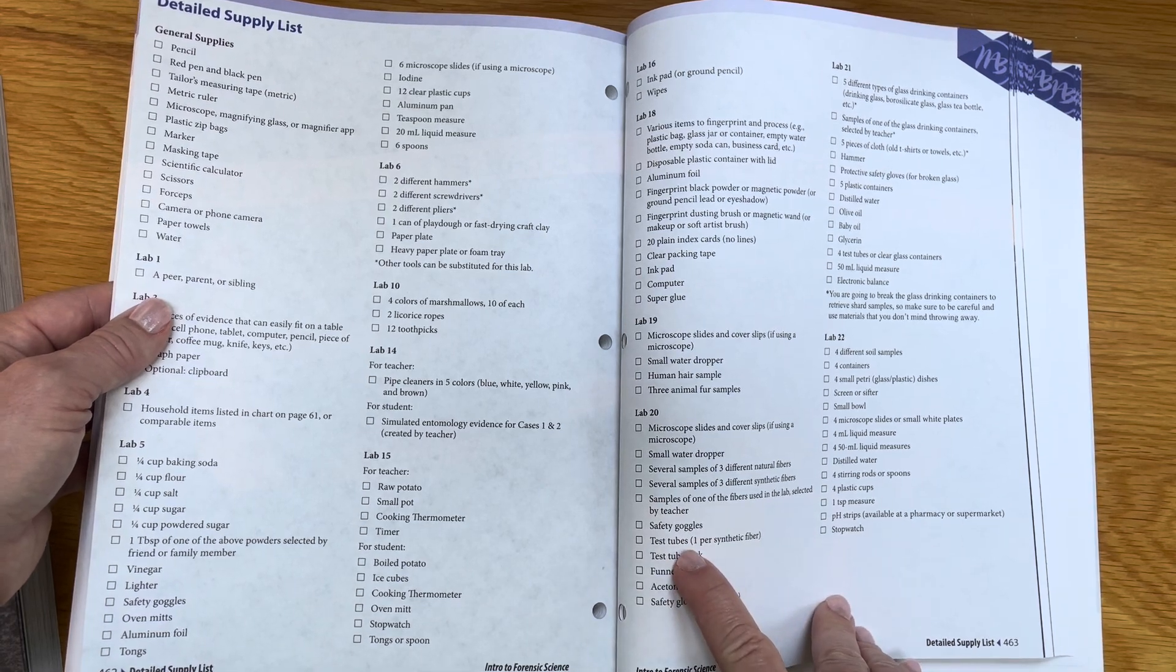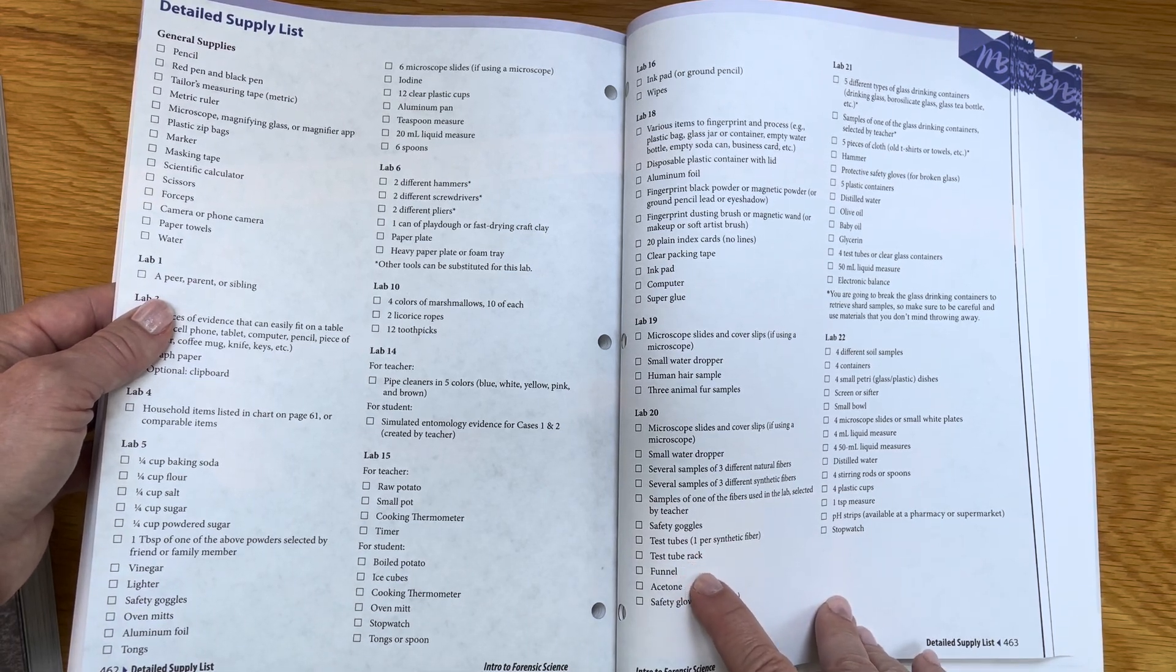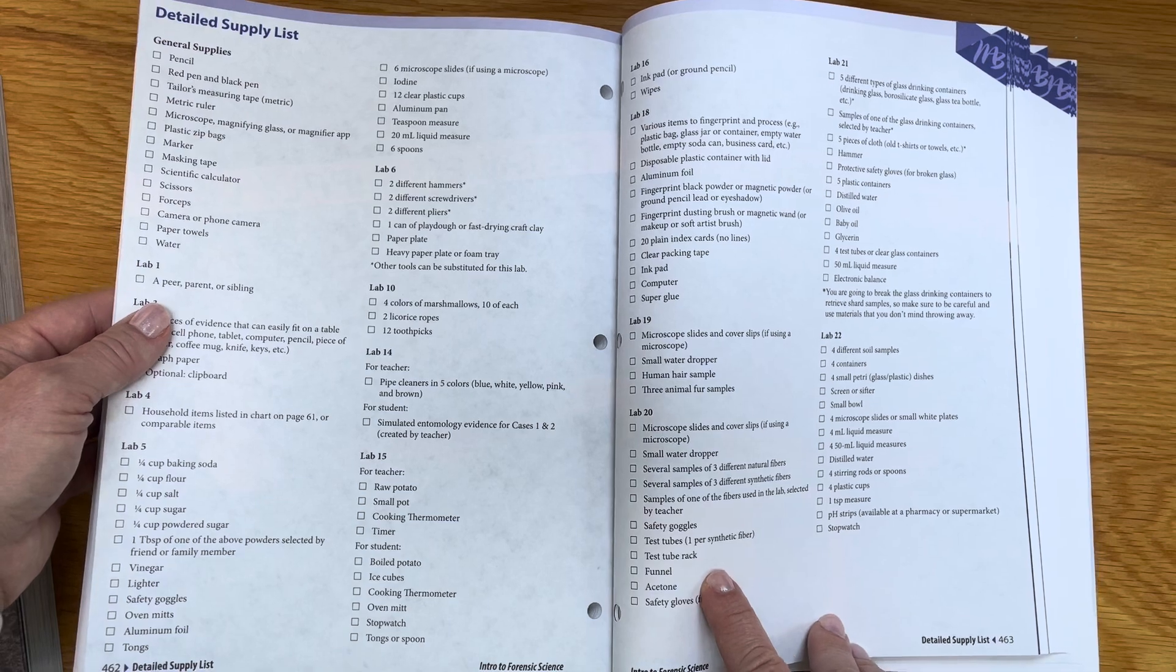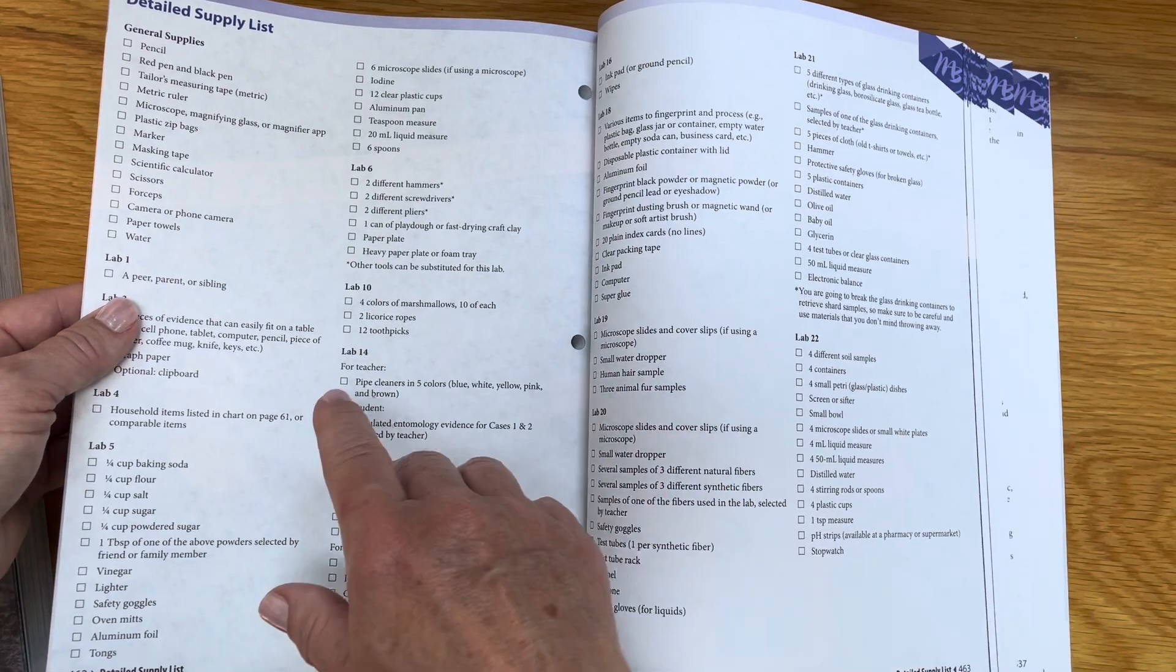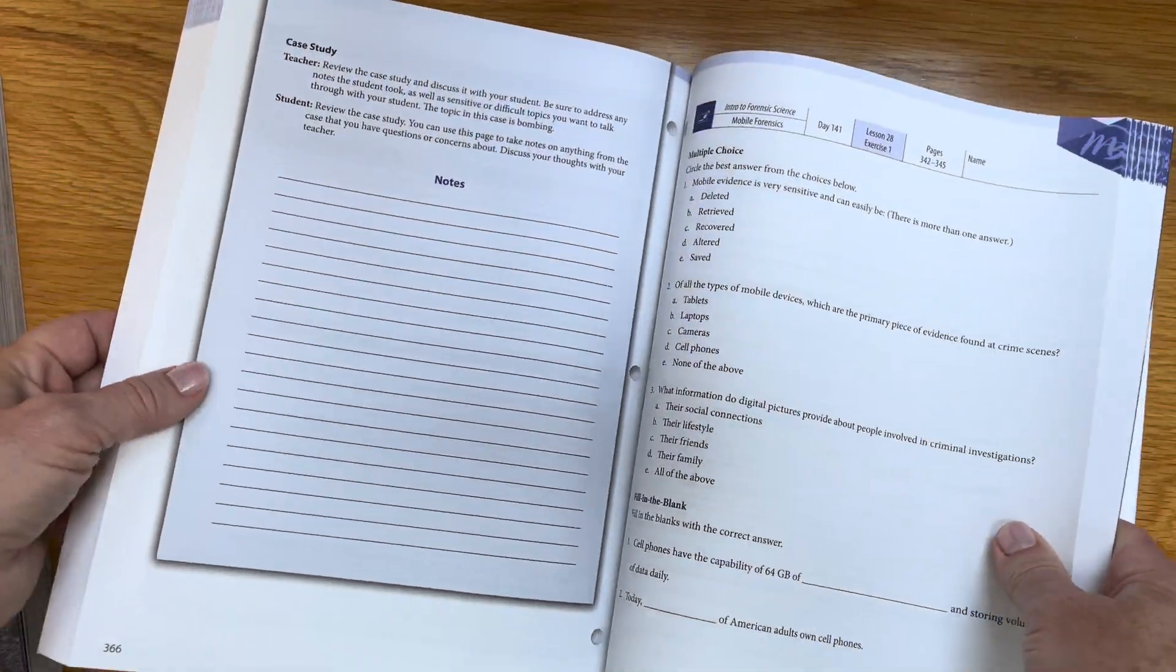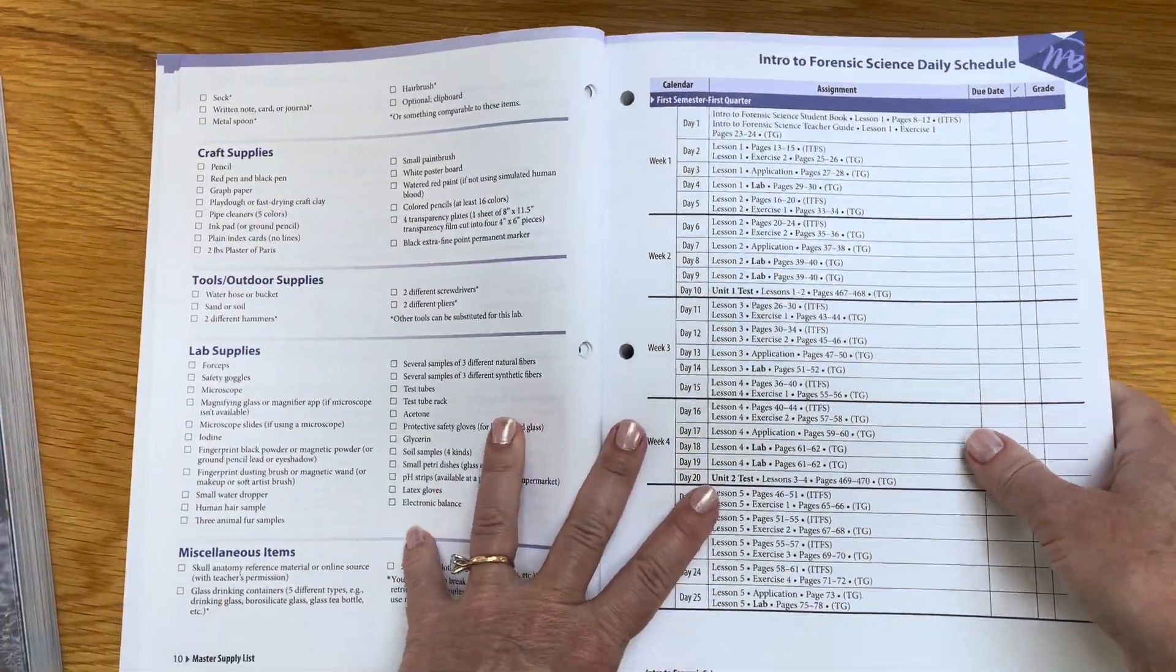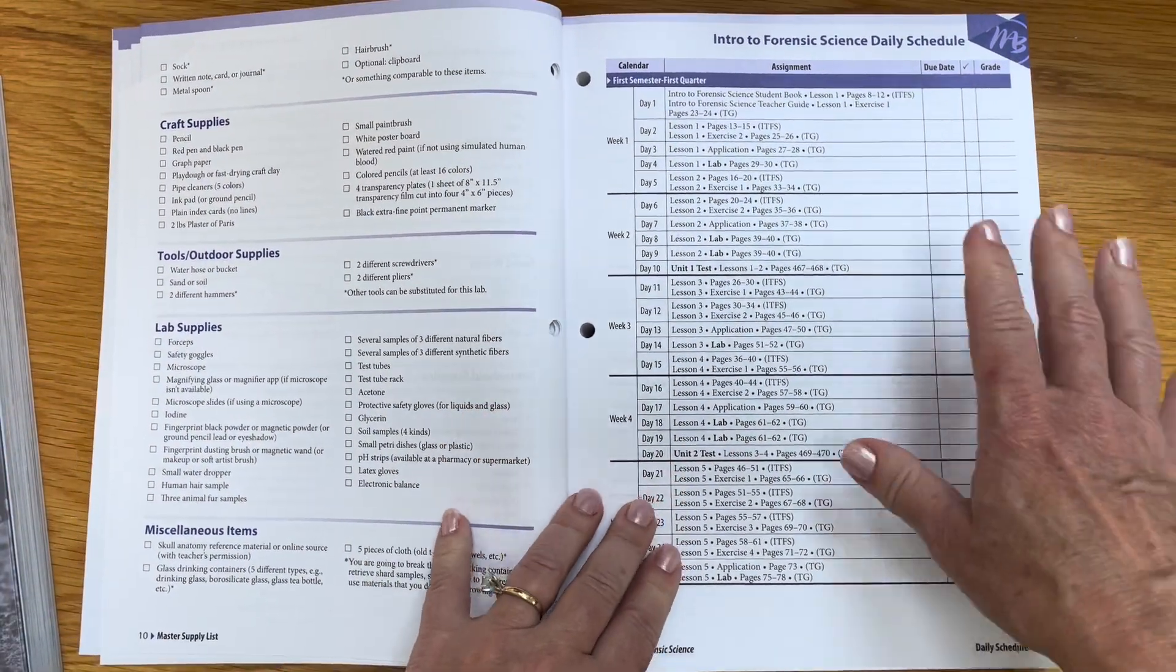Here's one with test tubes and a test tube rack, so you might need to order those kinds of materials. So that is for the labs, which you can easily do at home.